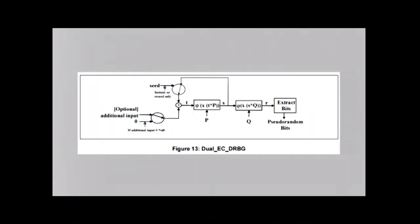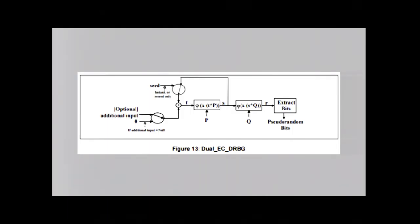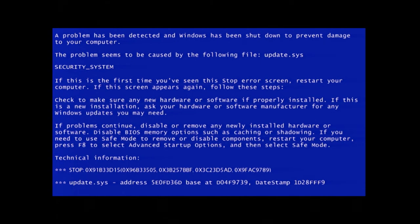Then there's the Dual EC DRBG standard. This was one option in a NIST standard for generating pseudo-random bits. P and Q are public parameters — points on an elliptic curve. If P and Q are chosen in a random and independent way, the algorithm seems to be secure. But a party who chooses P and Q themselves can choose values that look random to observers but allow that party to defeat the generator. So: who chose P and Q, and how do we know they didn't choose it to leave a backdoor?